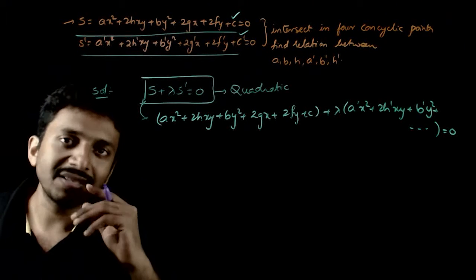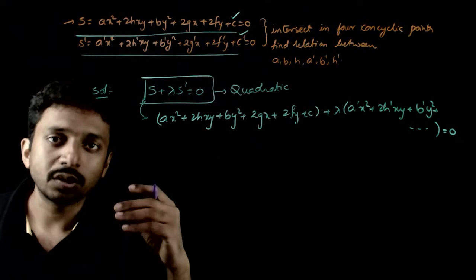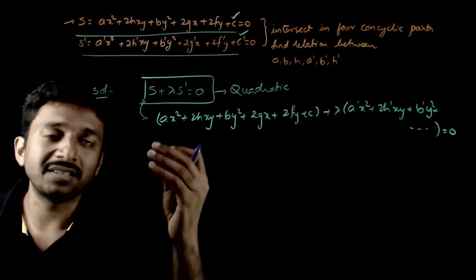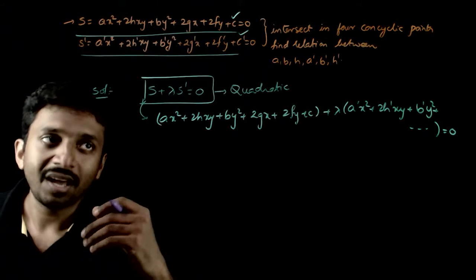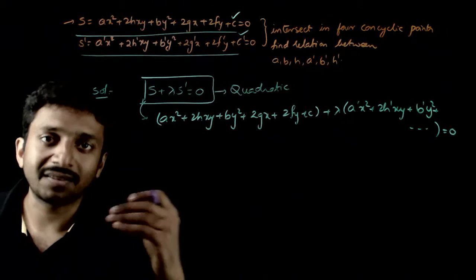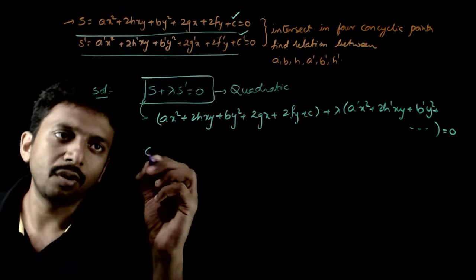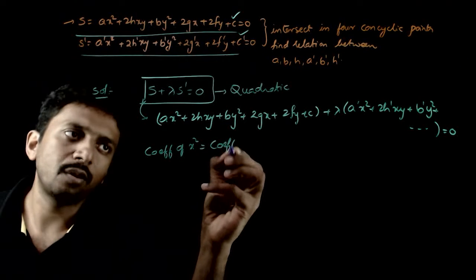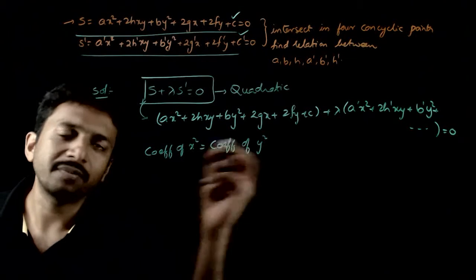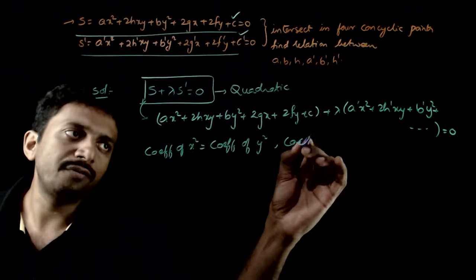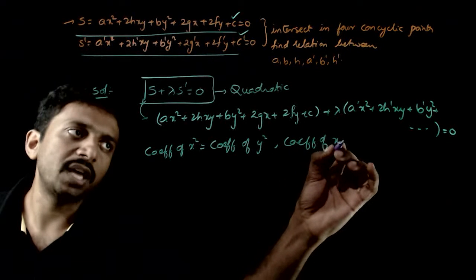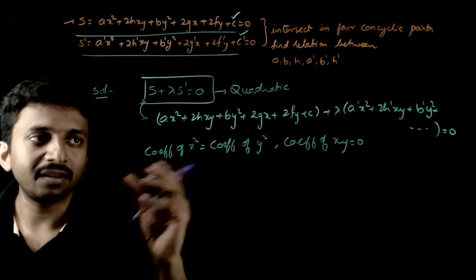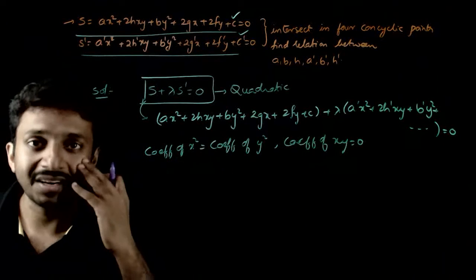This is a quadratic curve passing through the points of intersection of the two curves. I want this to be a circle. If these four points are concyclic, I can find a circle through them. For this curve to be a circle, the coefficient of X² must equal the coefficient of Y², and the coefficient of XY must equal zero.